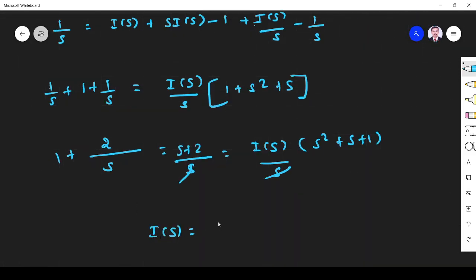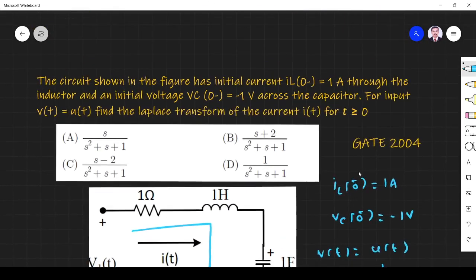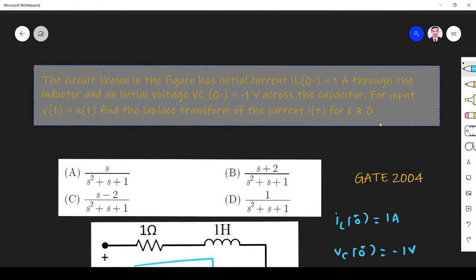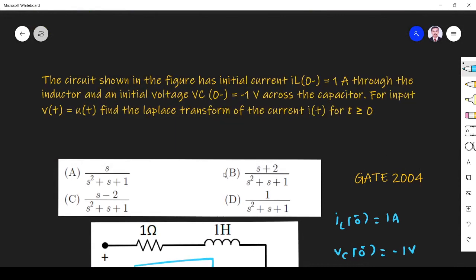Which is nothing but Laplace transform of I(t). (s+2)/(s²+s+1). So let us see where is the option. Okay. (s+2)/(s²+s+1). So option B is the right answer. Thank you.